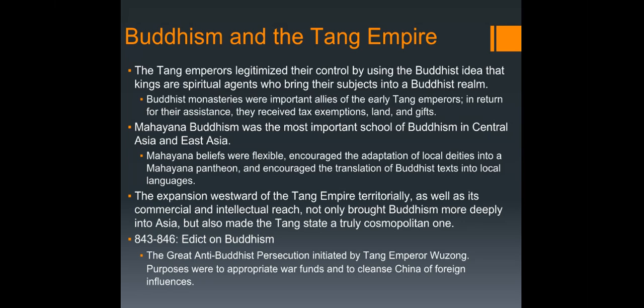The great anti-Buddhist persecution was led by Emperor Wuzong. The purpose was to eliminate monasteries, collect tax money to balance the treasury after an expensive war, and cleanse China of foreign influences. In our first DBQ, you'll actually read the Edict on Buddhism, in which Buddhism is discussed as a foreign, barbarian religion that has no business being in China.